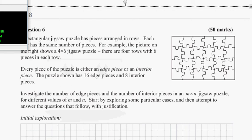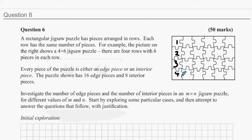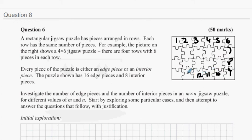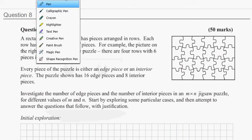Now question a: a regular jigsaw puzzle has pieces arranged in rows, each row has the same number of pieces. For example, a 4 by 6 puzzle has 4 pieces down and 6 pieces across. Every piece is either an edge piece or an interior piece — the puzzle shown has 16 edge pieces. Investigate the number of edge pieces and interior pieces in an m by n jigsaw puzzle for different values of m and n.